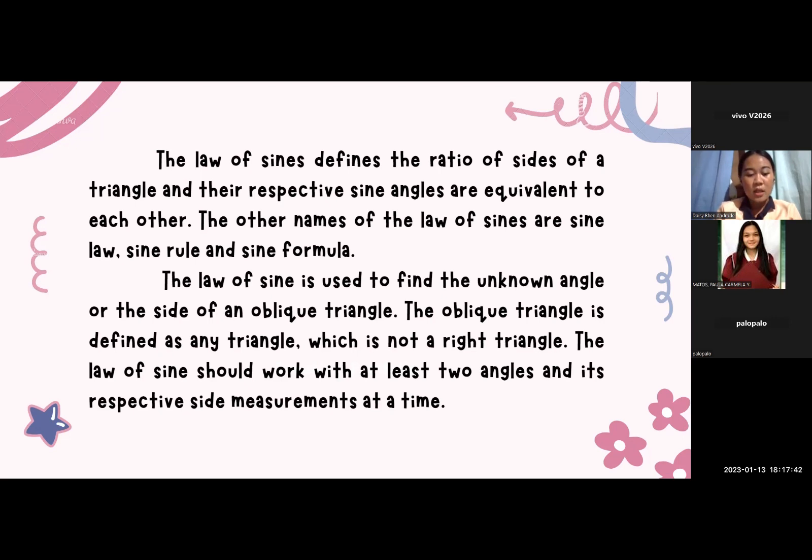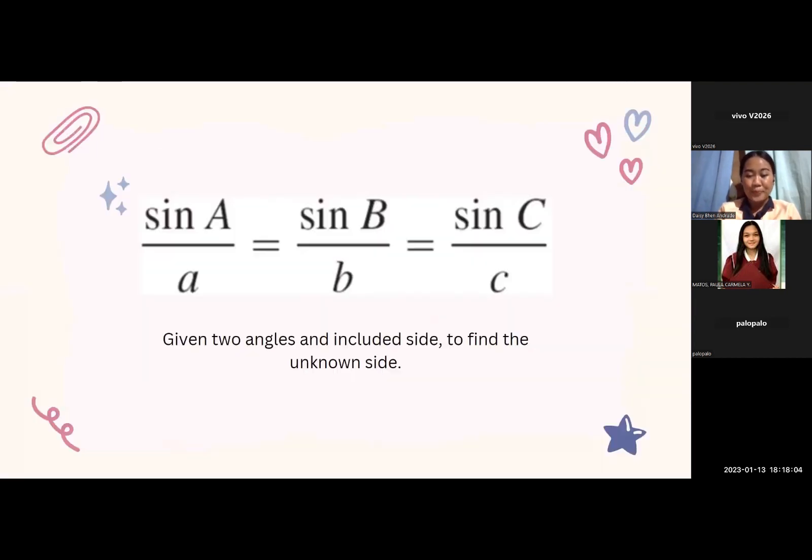The law of sines is used to find the unknown angle or the side of an oblique triangle. The oblique triangle is defined as any triangle that should work with at least two angles and its respective side measurements at a time.